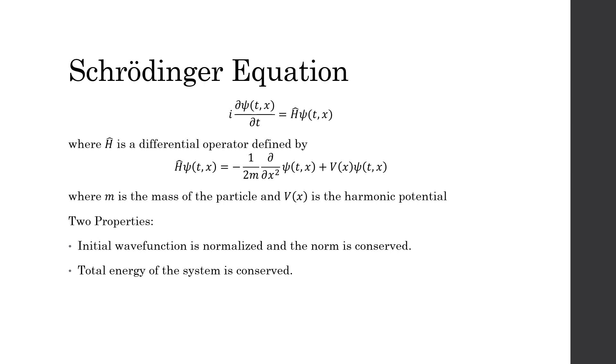There are two properties within the Schrödinger equation that we must observe. When the initial wave function is normalized, the wave function norm is conserved throughout the system. And second, the total energy of the system is conserved.